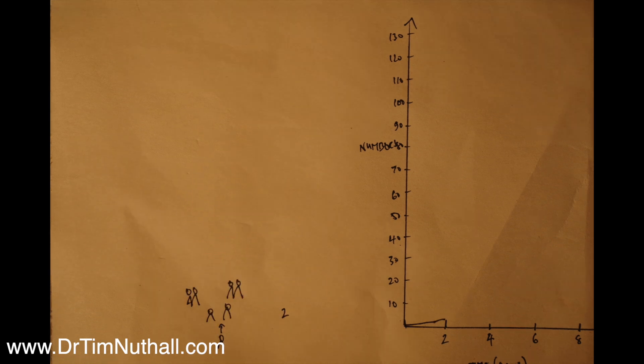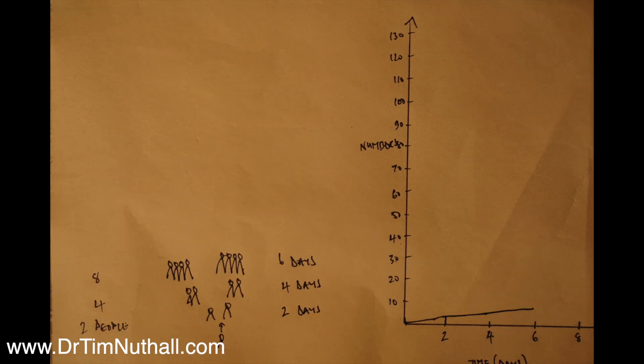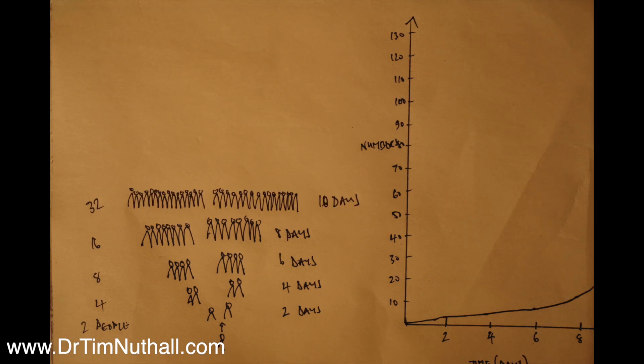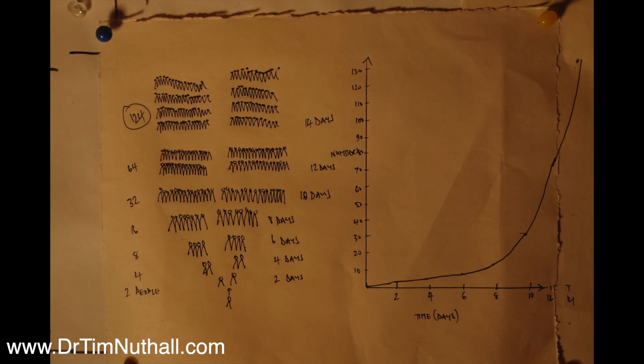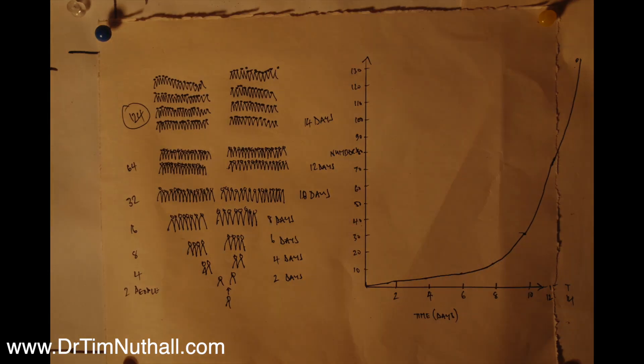If we do nothing and don't apply the rules of social distancing, each person statistically will infect two others. This will result in a doubling of numbers every two days. At first the spread is slow, but very quickly this speeds up and the infected numbers get very large very quickly.